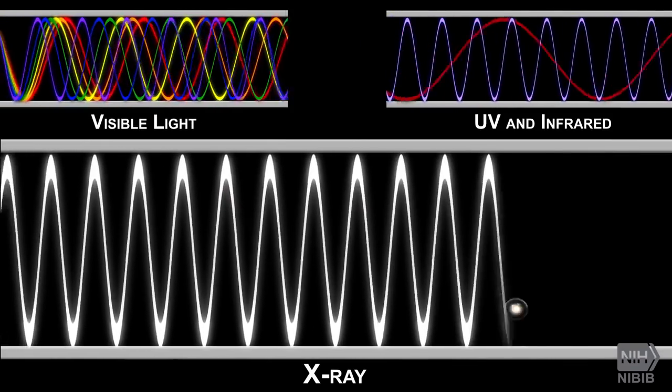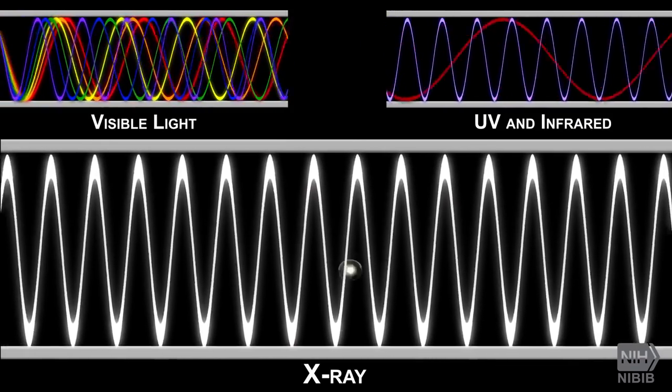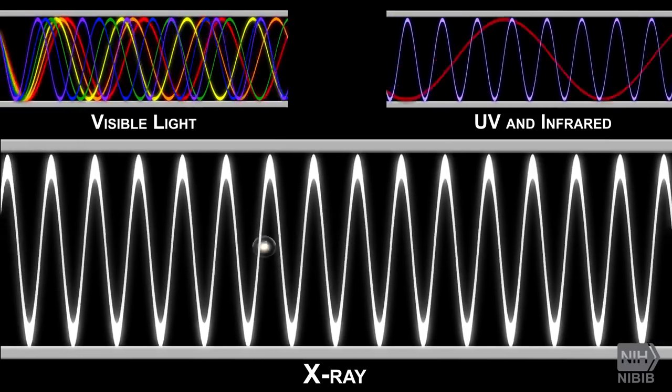X-rays have very short wavelengths that, unlike visible light, are able to pass right through most tissues in the human body.